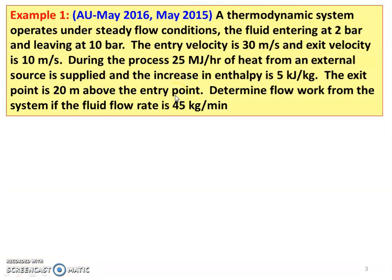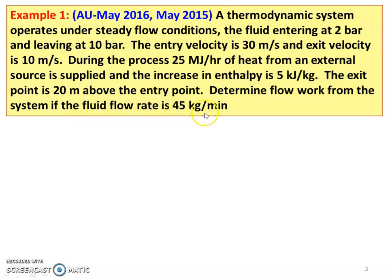The first example is from two question papers, May 2016 and May 2015. A thermodynamic system operates under steady flow conditions. The fluid entering at 2 bar and leaving at 10 bar. The entry velocity is 10 meters per second and exit velocity is 10 meters per second. During the process, 25 megajoules per hour of heat from an external source is applied and the increase in enthalpy is 5 kilojoules per kilogram. The exit point is 20 meters above the entry point. Determine the flow work and the work done from the system if the fluid flow rate is 45 kilograms per minute.